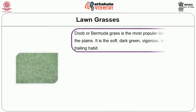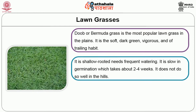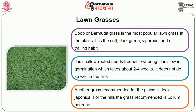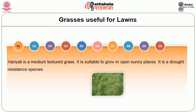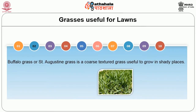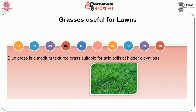Then we will see the lawn grasses. Durva or Bermuda grass is the most popular lawn grass in the plains. It is soft, dark green, vigorous and of trailing habit. It is shallow rooted and needs frequent watering. It is slow in germination, which takes about 2 to 4 weeks, and does not do well in the hills. Another grass recommended for the plains is Zoysia japonica. For the hills, the grass recommended is Lolium perenne. Other grasses recommended for making lawns include Hybrid — a medium textured grass suitable for open sunny places and drought resistant. Buffalo grass or St. Augustine grass is a coarse textured grass useful in shady places. Centipede grass is a fine textured grass best for saline soil exposed to open sunlight. Blue grass is a medium textured grass suitable for acid soil at higher elevations.